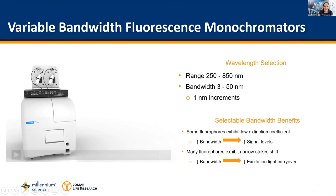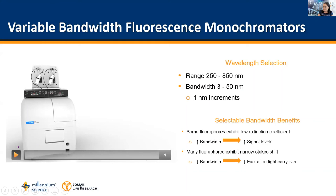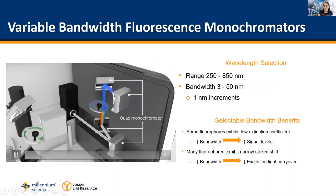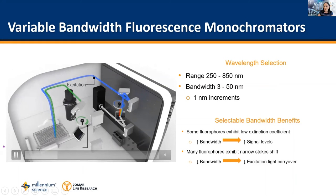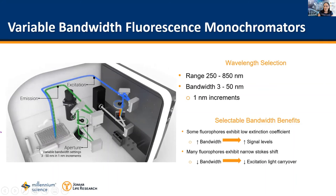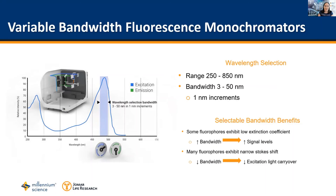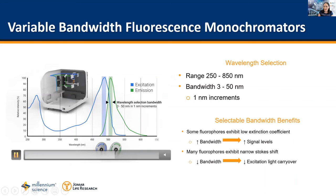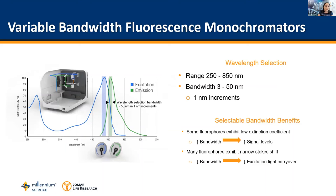A great feature is the monochromators, and this is where the BioTek Neo especially shines. In the Neo, the monochromators have a range from 250 to 850 nanometers with a bandwidth of 3 to 50 nanometers in one nanometer increments. Why is this important? With a variable bandwidth you can dial in to your excitation and emission peaks — using a large bandwidth provides increased sensitivity and lower limits of detection, while a small bandwidth lets you dial in specifically to avoid crosstalk between closely spaced fluorophores.